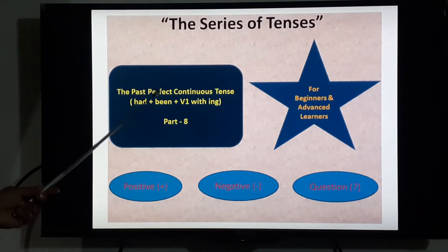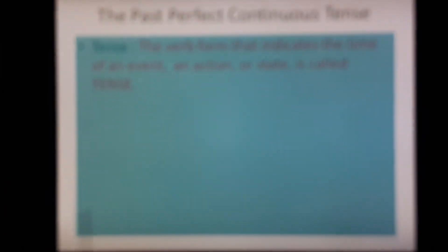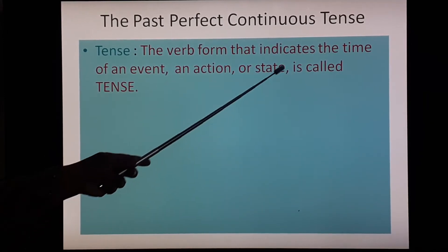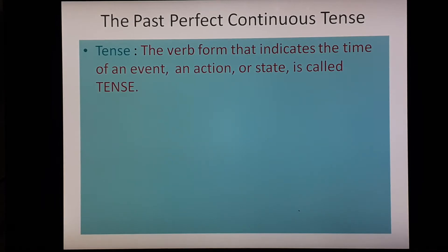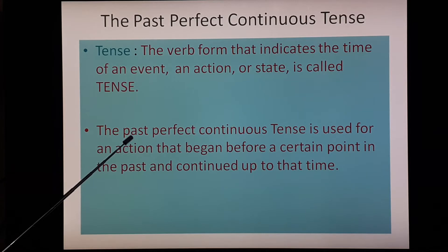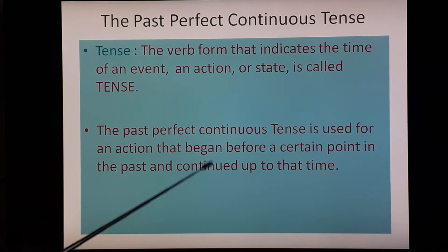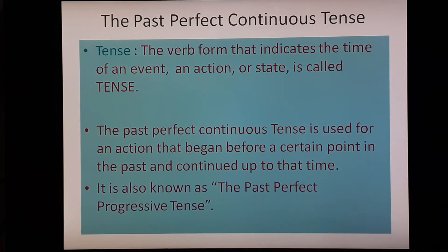Today we are going to see the past perfect continuous tense — that is tense number 8. The verb form that indicates the time of an event, an action or state is called tense. Tense plays a very important role in each and every sentence, because through the verb we can come to know about the tense. The past perfect continuous tense is used for an action that begun before a certain point in the past and continued up to that time. It is also known as the past perfect progressive tense.